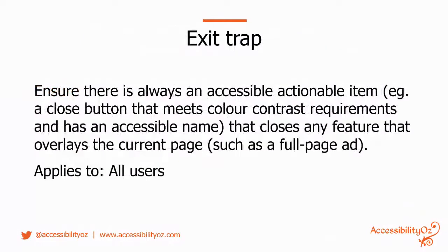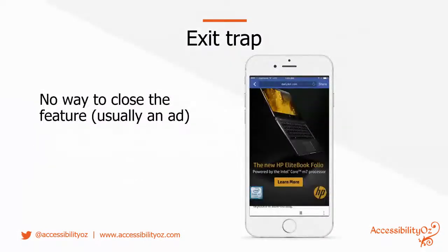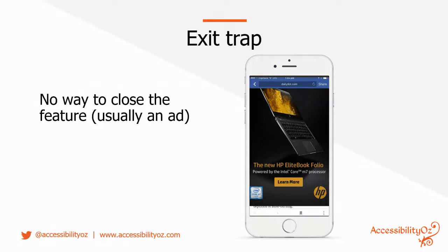The first trap is the exit trap: ensure there is always an accessible, actionable item — for example a close button that meets color contrast requirements or has an accessible name — that closes any feature overlaying the current page, such as a full-page ad. Here's an example where an ad overlays the entire page and the only way to close it is to close the app. This is an example for a website — we've all seen pop-ups trying to sell something where the only way to close it is to hit a small close button that doesn't meet color contrast or touch target size requirements, leaving you stuck.